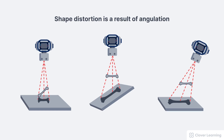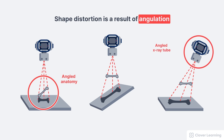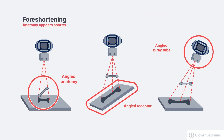In summary, shape distortion is a result of angulation either of the anatomy of interest, the x-ray tube, or the image receptor. Angulation of any of these factors affects the position of the target anatomy within the x-ray beam and affects its appearance on the radiograph. Foreshortening, when the radiographic image appears shorter than the actual anatomy, only occurs when the anatomy is not parallel to the image receptor. Elongation, when the radiographic image appears longer than the actual anatomy, can be caused by x-ray tube or image receptor angulation.